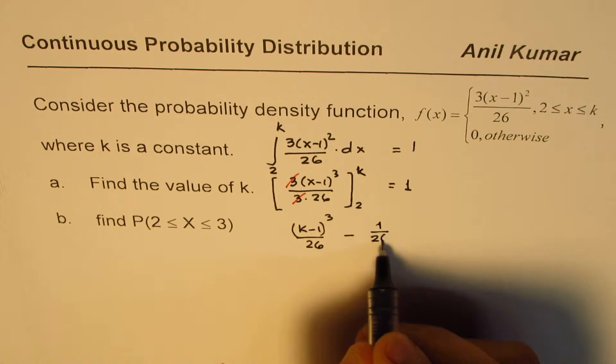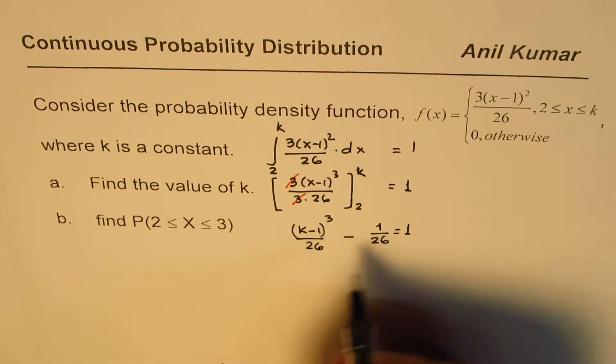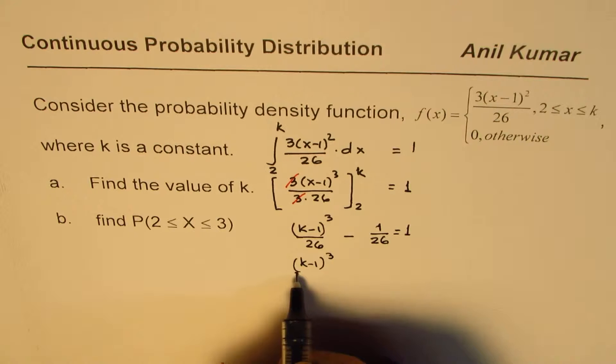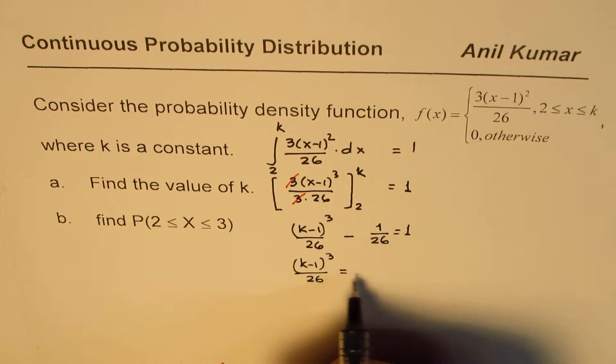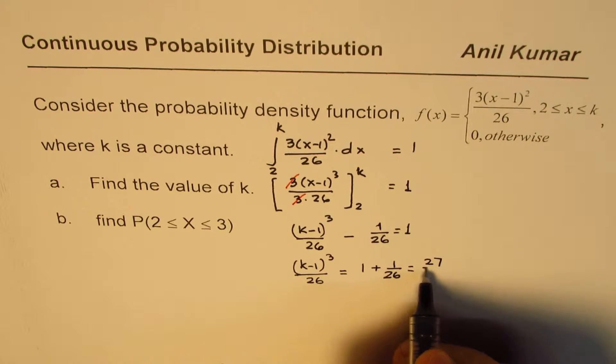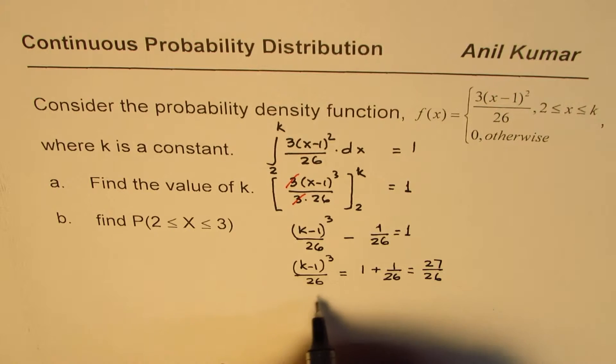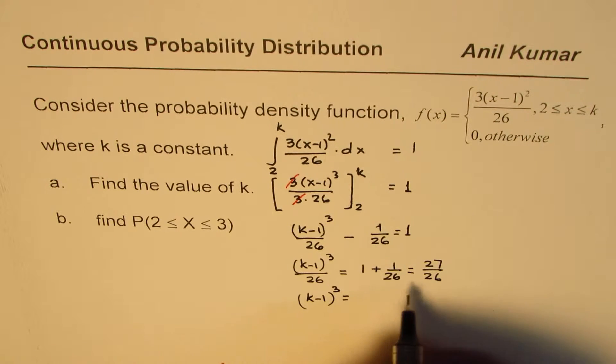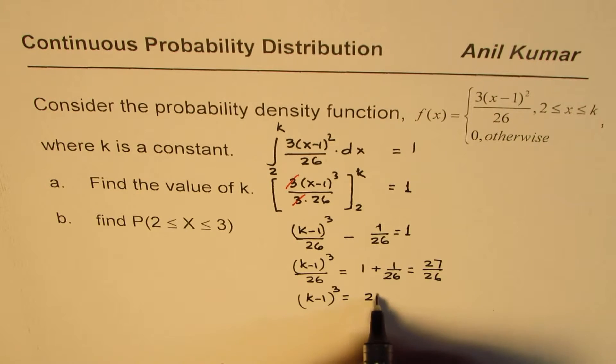Or we get (k-1)³ divided by 26 equals to 1 plus 1 over 26, which is 27 over 26. And now we can say (k-1)³ is equal to 27.